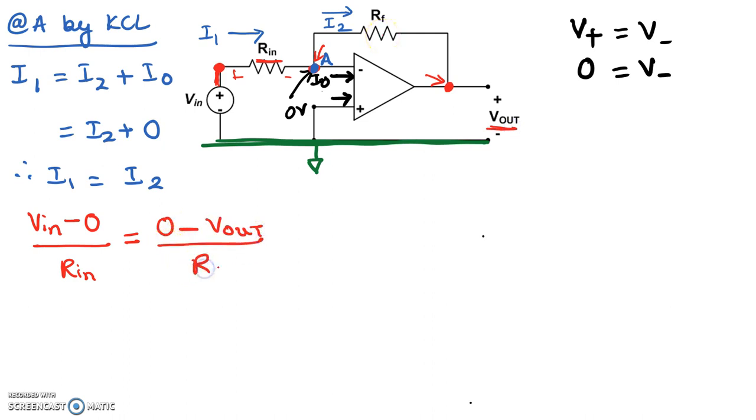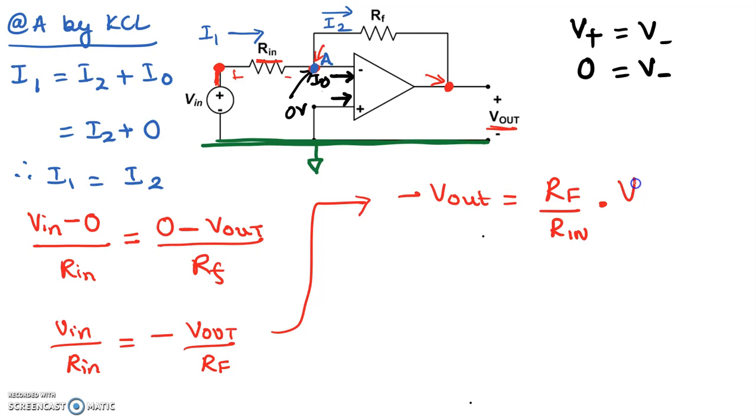So we have Vin minus zero divided by Rn equals zero minus Vout divided by Rf. Now rearranging the terms, we basically get Vin over Rn equals minus Vout over Rf. That is, based on that, we get minus Vout equals Rf over Rn times Vin.